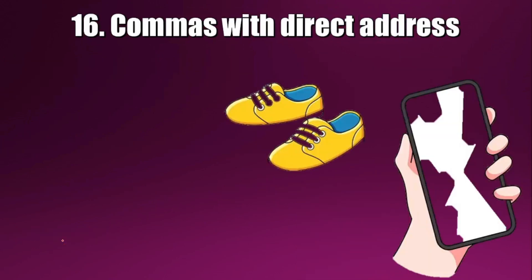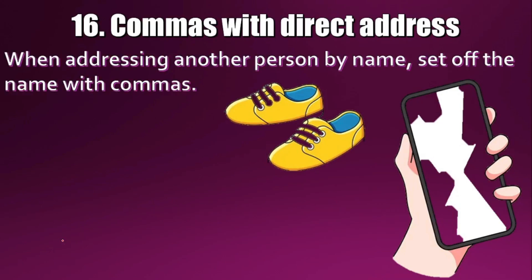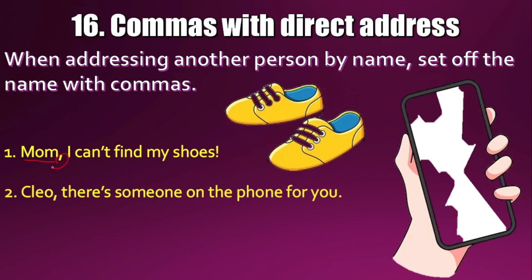The sixteenth use: commas with direct address. When addressing another person by name, set off the name with commas. For example: 'Mom, I cannot find my shoes.' Here 'mom' is used as a proper noun, so place a comma after it. 'Cleo, there is someone on the phone for you.' Cleo is the name being addressed, so a comma follows it. 'Hello, Chester.' Even a greeting like 'hello' is separated from the name with a comma when addressing someone.